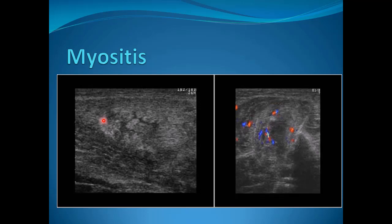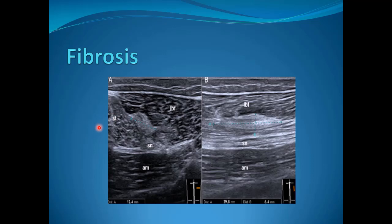Patients with myositis usually show the appearance of muscle edema, similar to the edema seen in subcutaneous tissue, with mild increased vascularity. This cobblestone appearance of intramuscular edema helps us diagnose myositis.